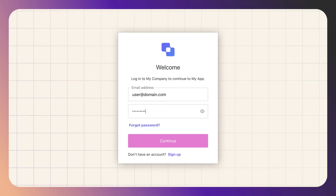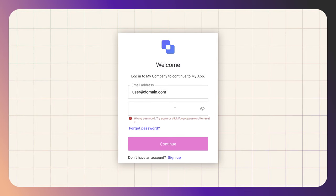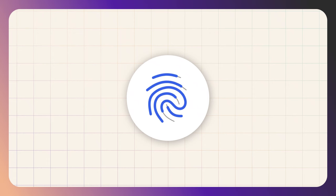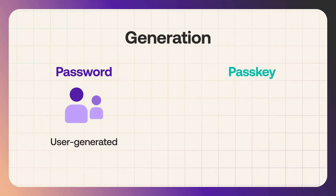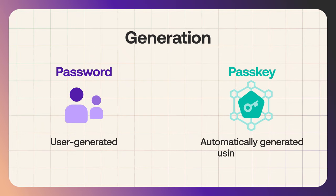The second difference is that a password is something that you have to remember, or in other words, it's a shared secret, while a passkey is just a secret that you can unlock later on. A password is something that you as the user have to create, while a passkey is automatically generated using public key cryptography.